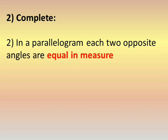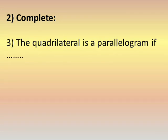The opposite angles are equal in measure. Number three: the quadrilateral is a parallelogram if any one of four conditions is satisfied.